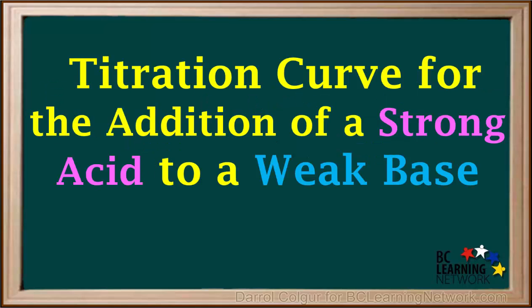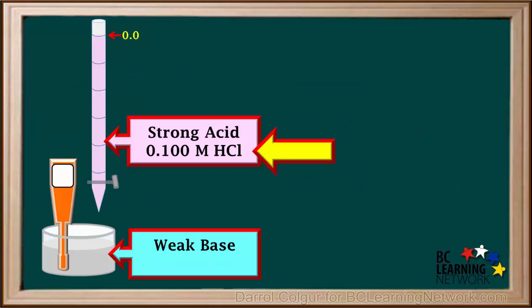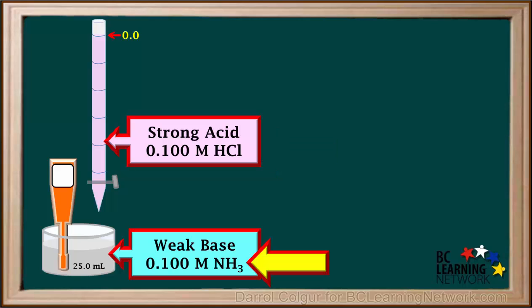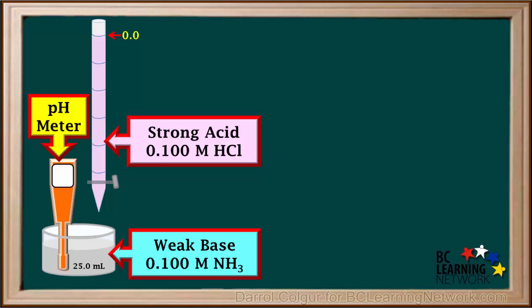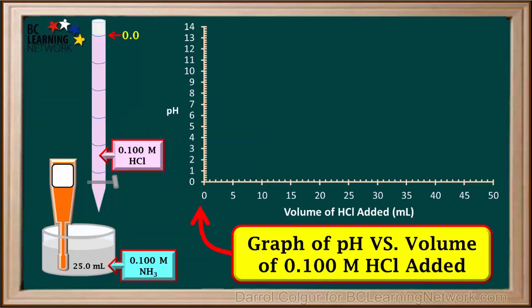Here we'll consider the addition of a strong acid to a solution which is initially a weak base. The strong acid we'll use in our example is 0.1 molar HCl, and the weak base we'll use is 0.1 molar NH3. We have initially added 25 ml of 0.1 molar NH3 to the beaker. A pH meter will be used to monitor the pH of the mixture in the beaker below the burette. We'll draw a graph of the pH in the beaker versus the volume of HCl added to the NH3 in the beaker.